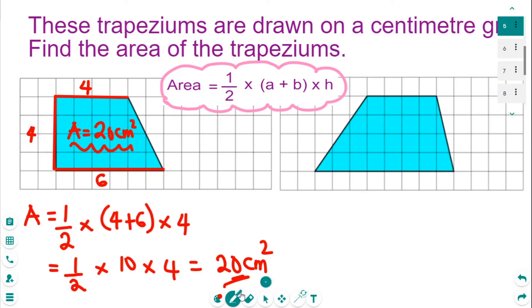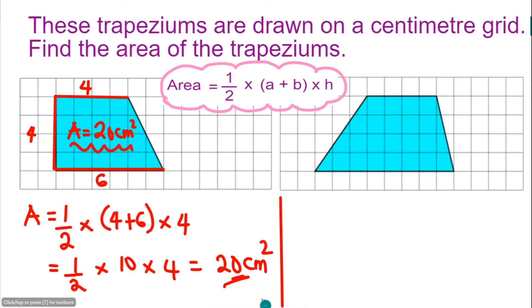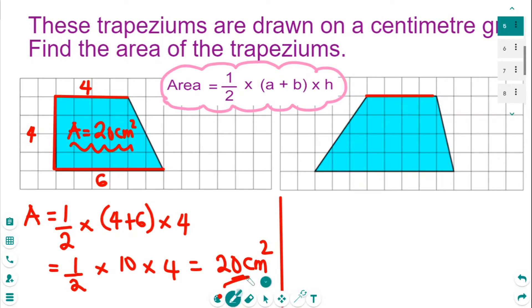Let me put a divide line to separate this from the next trapezium. For the trapezium on the right, the top parallel side counts 1, 2, 3, 4 — that's 4 cm. The bottom parallel side counts 1, 2, 3, 4, 5, 6, 7, 8 — that's 8 cm. The vertical height counts 1, 2, 3, 4 — so the vertical height is 4 cm.